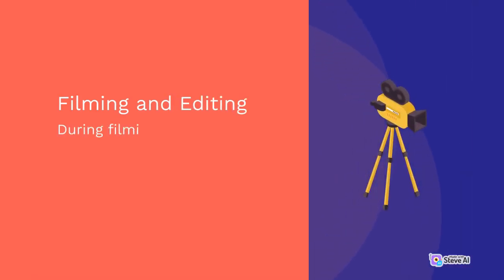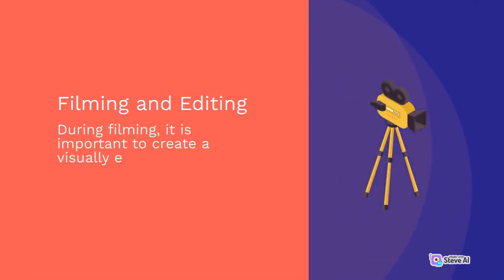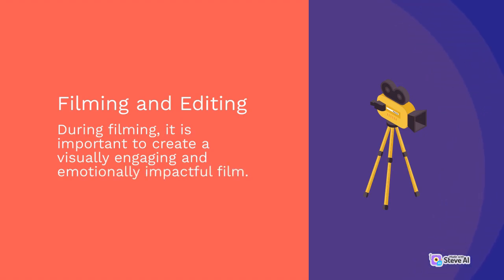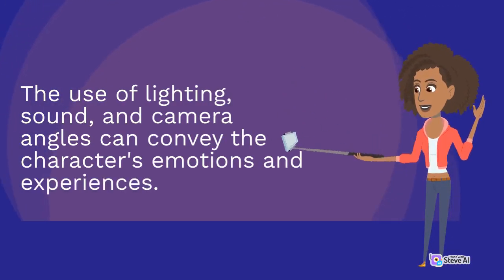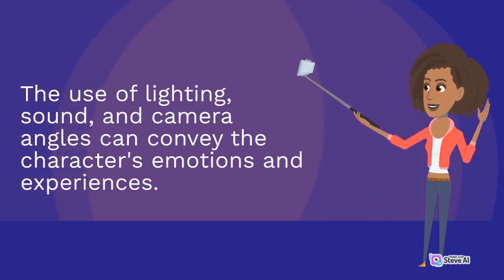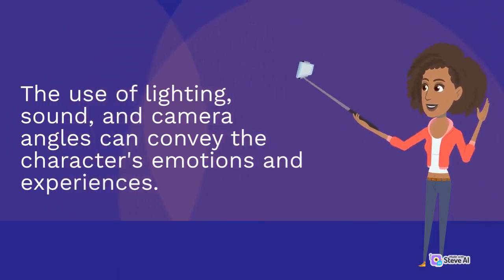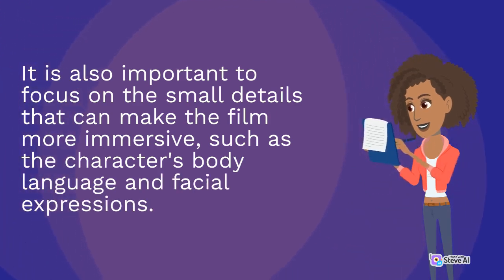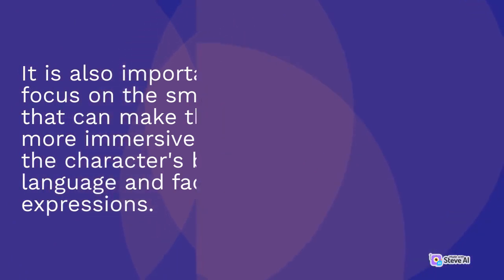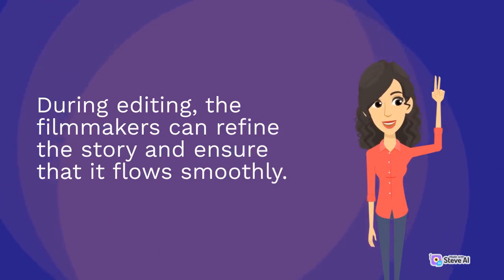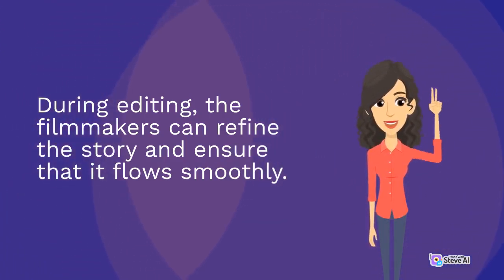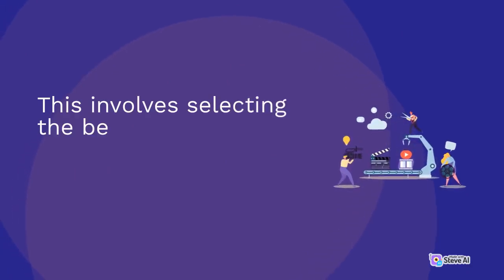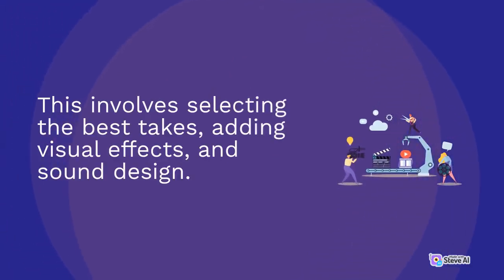Filming and Editing: During filming, it is important to create a visually engaging and emotionally impactful film. The use of lighting, sound, and camera angles can convey the character's emotions and experiences. It is also important to focus on small details that can make the film more immersive, such as the character's body language and facial expressions. During editing, the filmmakers can refine the story and ensure that it flows smoothly, selecting the best takes, adding visual effects, and sound design.